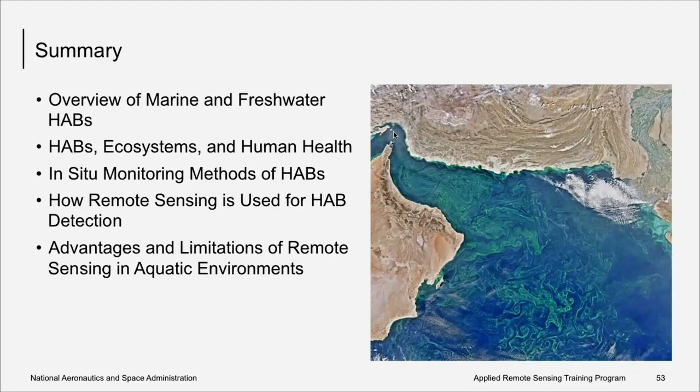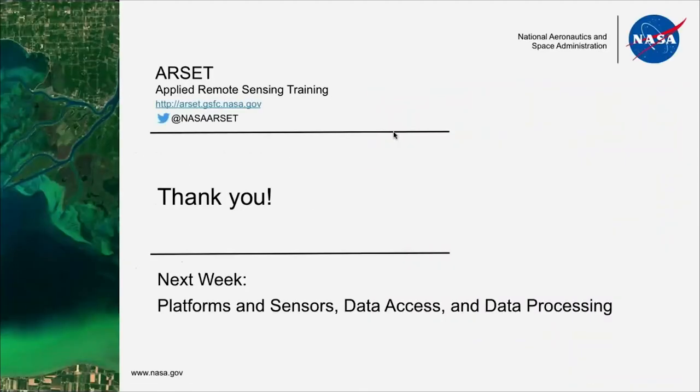So, to summarize, we have provided an overview of marine and freshwater harmful algal blooms, discussed HABs, ecosystems, and human health, given some examples of in-situ monitoring methods for HABs, provided a background for how remote sensing can be used for HAB detection, and canvassed advantages and limitations of remote sensing of HABs in aquatic environments. We thank you for your participation in today's session of this webinar series. A reminder that this series will meet each week on Tuesdays for three more weeks. Next week, Dr. Mehta will be discussing platforms and sensors, data access, and data processing. Please remember that we will have a short question and answer session immediately following this presentation. Type your questions into the chat feature of the webinar software. Thank you.